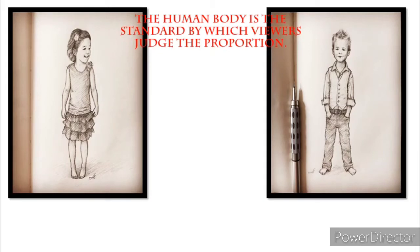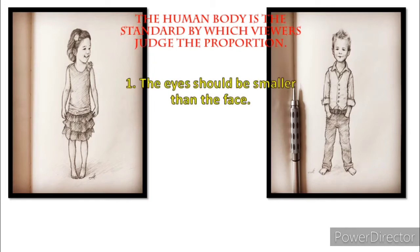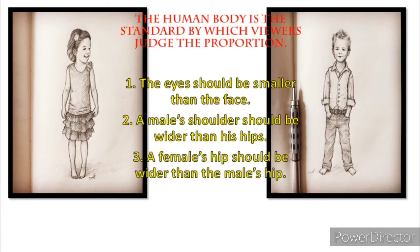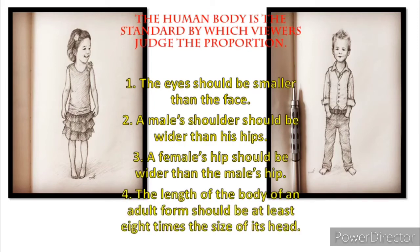Here are some universal truths about the proportion of the human body. In order to draw a perfect human body, these are the things you need to remember. Number one, the eyes should be smaller than the face. Number two, a male's shoulder should be wider than his hips. Number three, a female's hip should be wider than the male's hip. And number four, the length of the body of an adult form should be at least eight times the size of its head. Sometimes proportion is exaggerated to show emphasis, which is also acceptable in art. For instance, in drawing a caricature, the head may not be proportional to the body — that is the main point of a caricature, an image with its head bigger than its body.